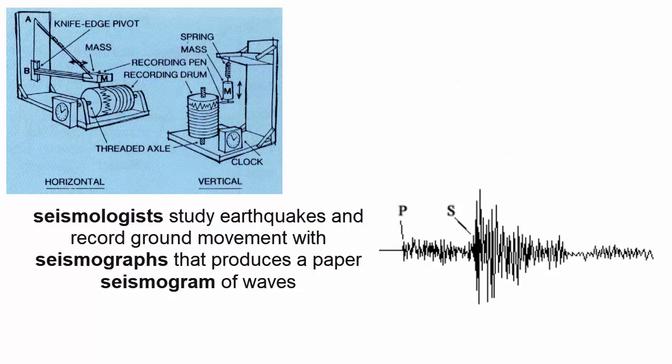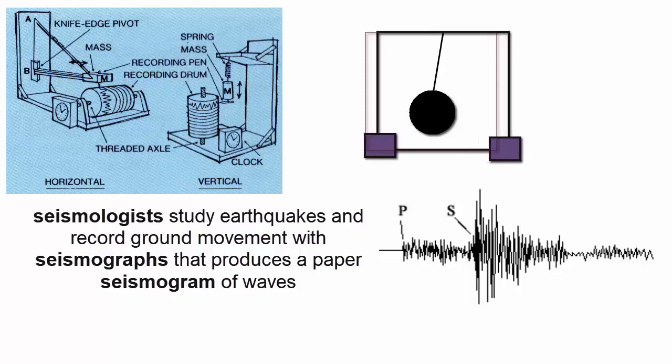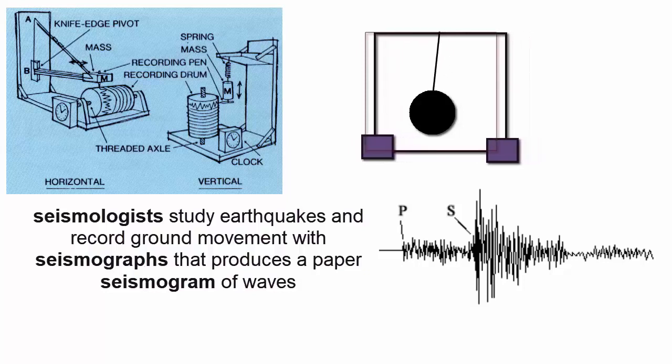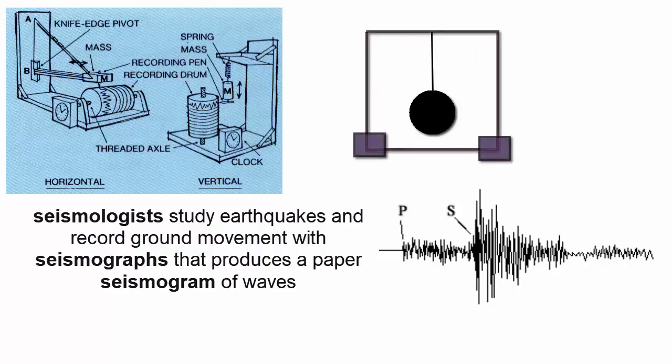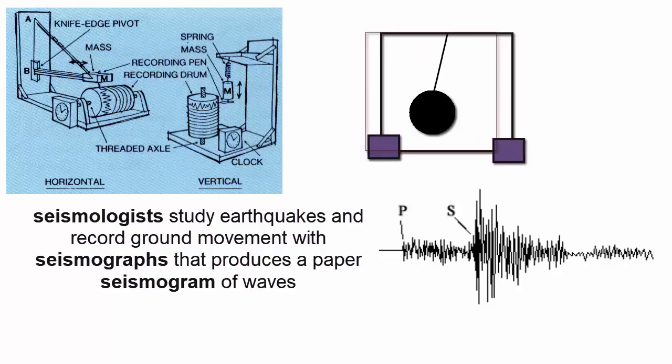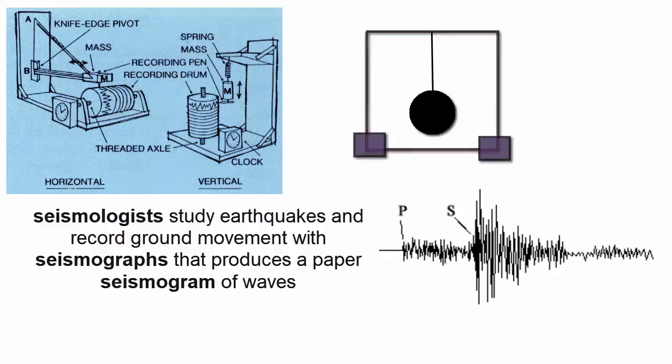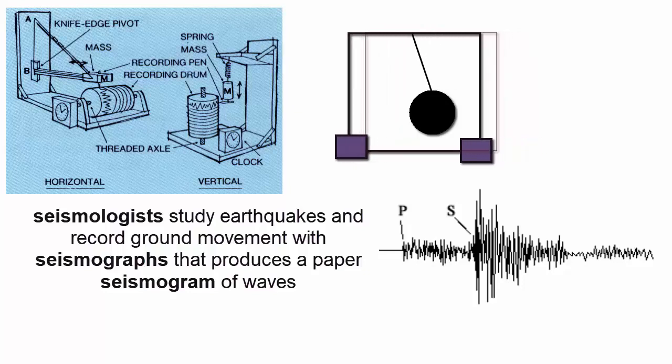A simple seismograph can be described as a hollow box attached to the ground so it moves in exactly the same direction and motion as the ground. Dangling in the middle of the box from the top is a heavy weight that is attached to a thin line. The weight is pulled towards Earth's center by gravity and because of its mass will stay in place during an earthquake while the box moves with the Earth around it. We can then measure how much distance is created in each dimension of the box between the weight and the sides of the box as the box moves with the Earth. Thus we can record accurate motion of the Earth.